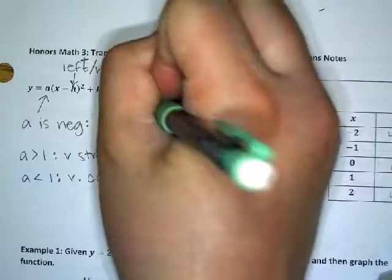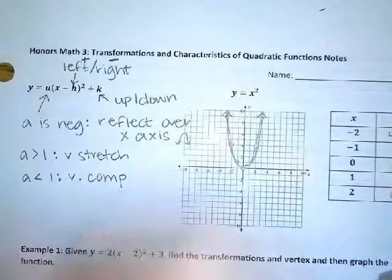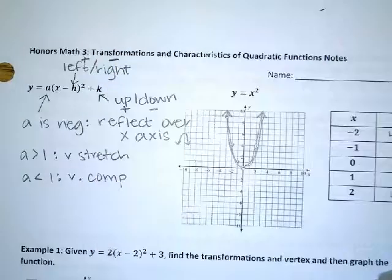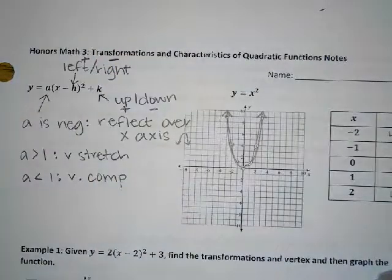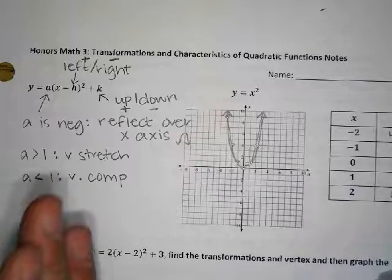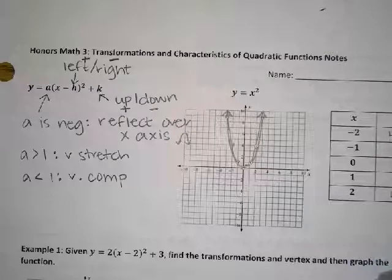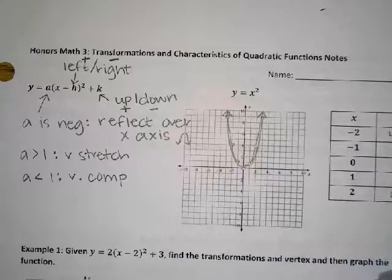The number on the end controls up or down. If it's a plus, it moves the graph up; if it's a minus, it moves the graph down. Those are all the transformations. When they ask what the transformations are, they want the words — is it getting tall and skinny, short and fat, moving left, moving right? That's what they want to know.